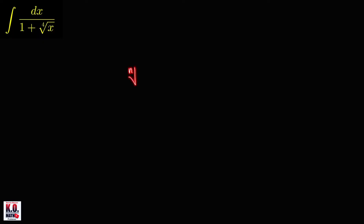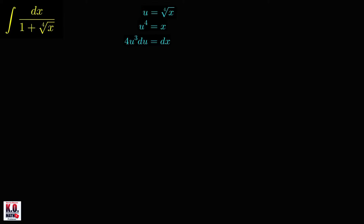Let's evaluate this integral. If you have an integrand that contains a radical expression, nth root of f of x, we may let this radical expression be our u. So in this case, let's make our u equal to the fourth root of x. And if this is our u, then raising both sides to 4, we'll get u raised to 4 equal to x. And this implies that 4u cubed du is equal to dx. Therefore, we can write our integral as integral of 4u cubed du over 1 plus u.